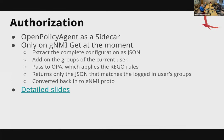For authorization, Open Policy Agent is a sidecar and it's only operating on GNMI get at the moment. Anyone can make any set, but if you don't know what's in the system, you don't know what to break. When you run the Ether GUI, you only get the set of enterprises you're supposed to see, only the set of slices, applications, and all those kinds of things.